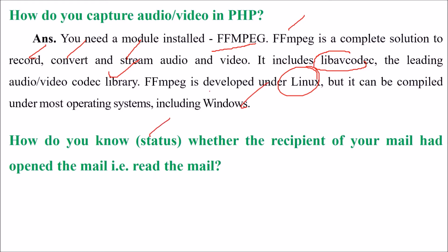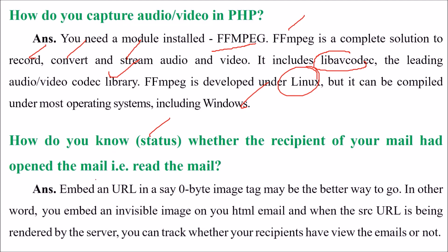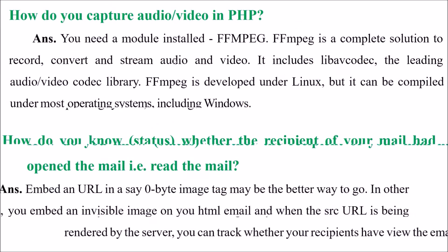How do you know the status of whether the recipient of your mail has opened the email and read it? Just embed a URL in a zero-byte image tag. In other words, you embed an invisible image in your HTML email. When the source URL is rendered by the server, you can track whether your recipient has opened the email or not.